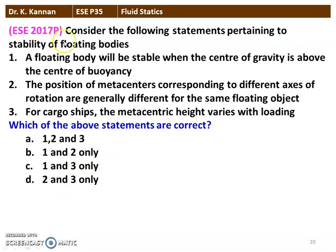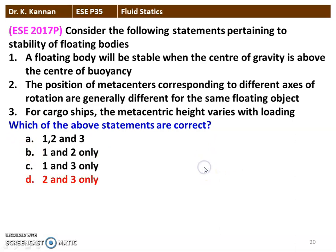The next question from the 2017 question paper. Consider the following statements pertaining to the stability of the floating body. Statement 1: A floating body will be stable when the center of gravity is above the center of buoyancy. Statement 2: The position of the metacenter corresponding to different axes of rotation are generally different for the same floating object. Statement 3: For a cargo ship, metacentric height varies with loading. Statements 2 and 3 are correct. Statement 1 is wrong.